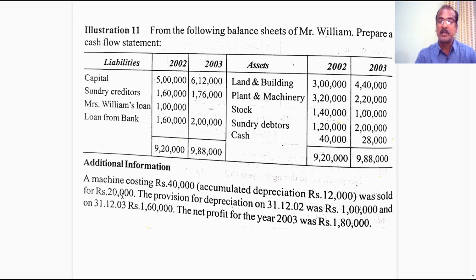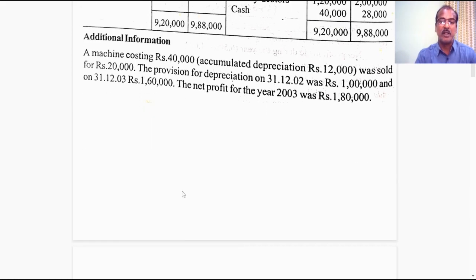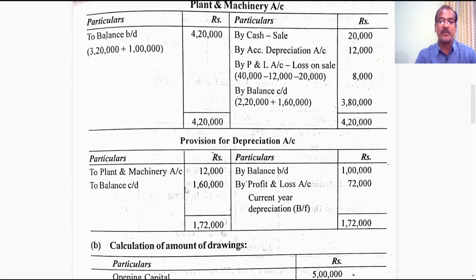The sale proceeds from machinery of 20,000 rupees will be taken to investing activities as cash inflow. The provision for depreciation on 31-12-2002 was 1 lakh rupees and on 31-12-2003 it is 1,60,000 — this is the closing balance of provision for depreciation. We will open a separate ledger account for provision for depreciation on machinery. The net profit for the year 2003 was 1,80,000 rupees. Now we will look at the ledger accounts one by one.